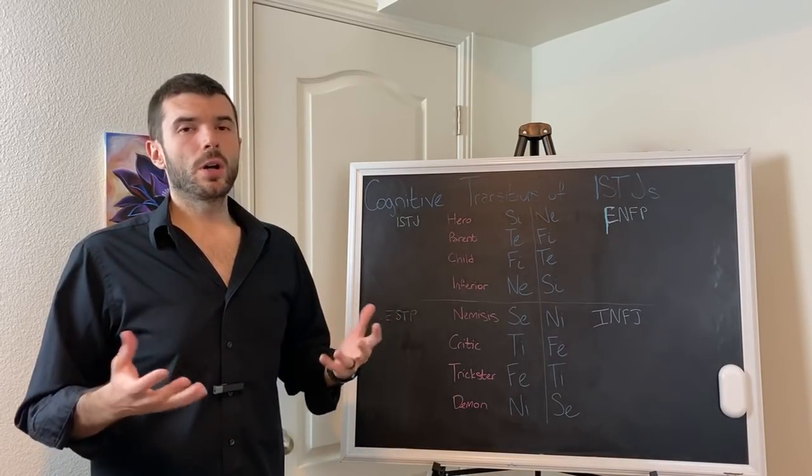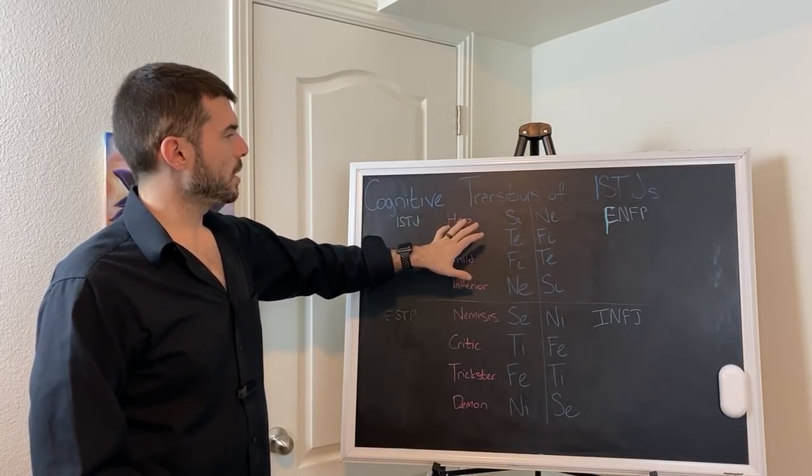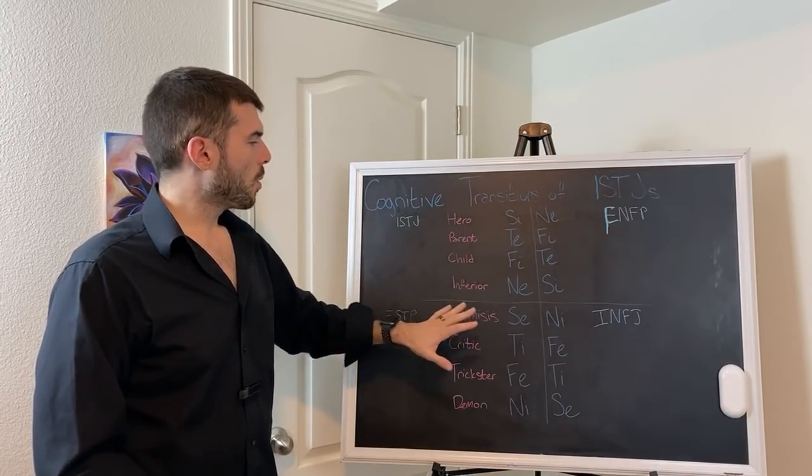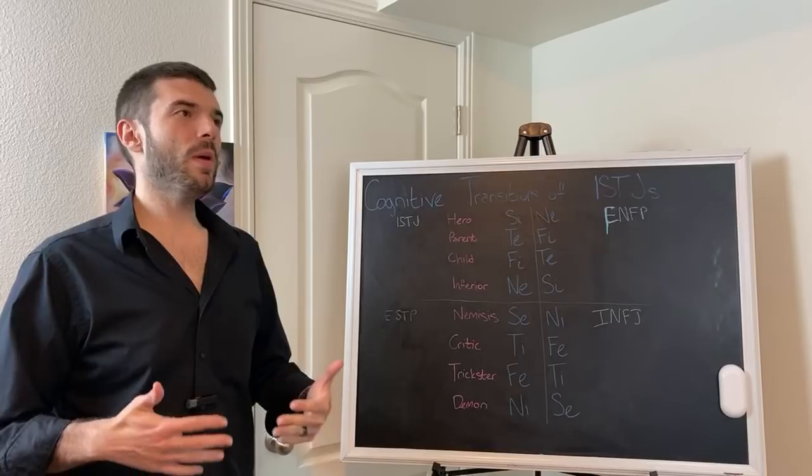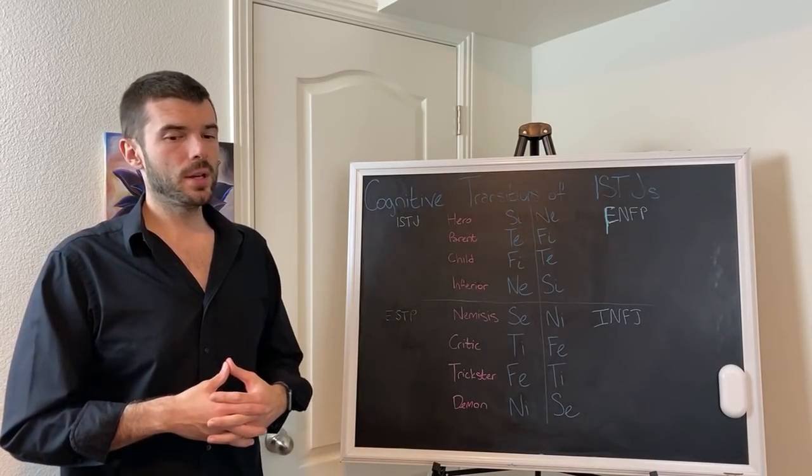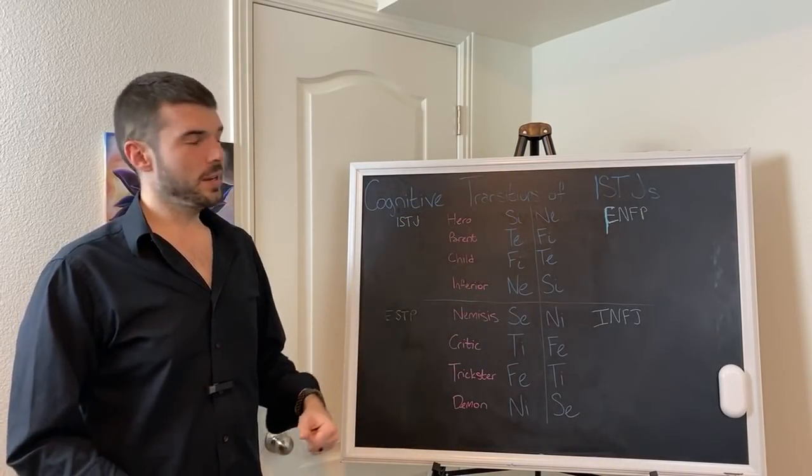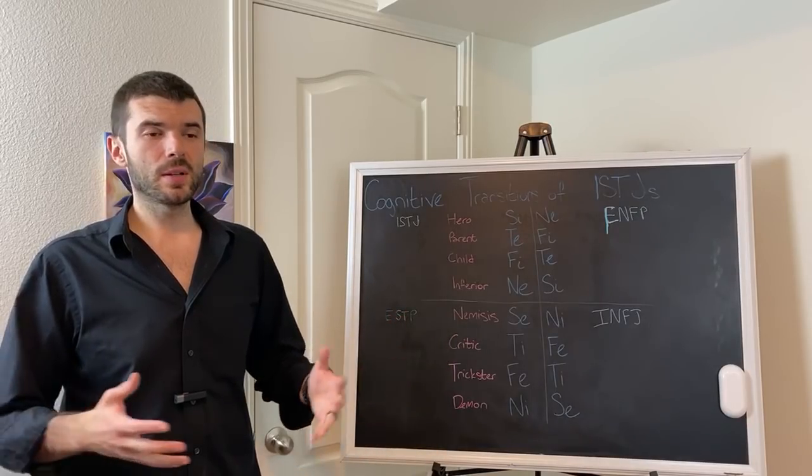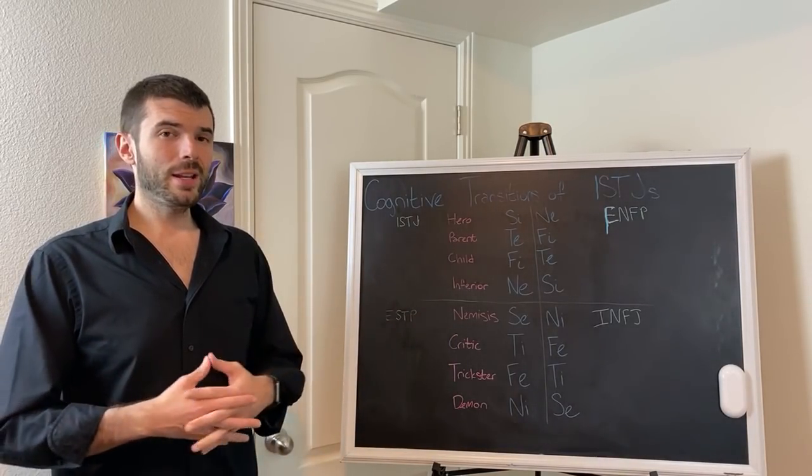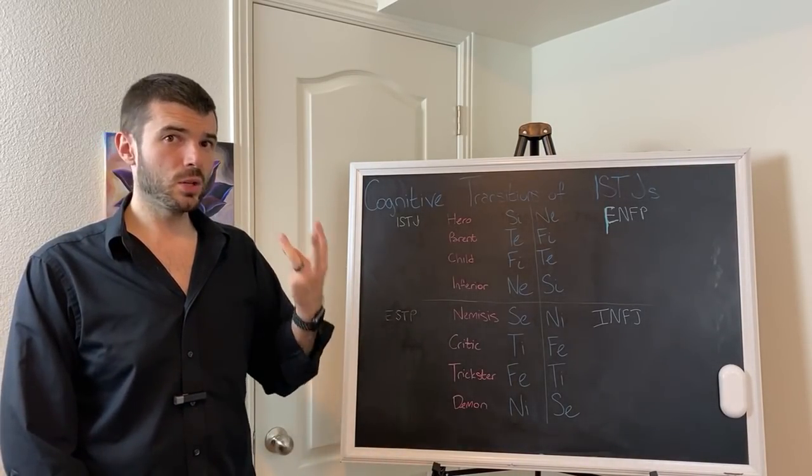Cognitive transitions of ISTJs. What are cognitive transitions? Cognitive transitions is basically the process by which somebody moves from the ego to the subconscious or the unconscious or the superego. People have four sides of their mind, and ISTJs are no exception.